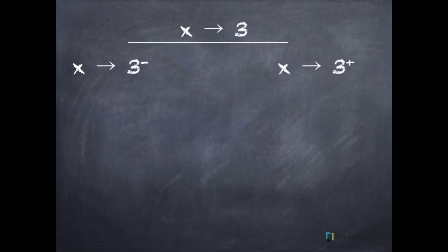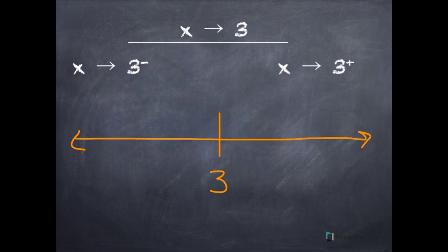How would you approach 3 from the left? You pick a number close to 3 from the left on a number line. Something close to 3 is 2.9, then 2.99, then 2.999. As we pick numbers closer and closer to 3 from the left, that's what's illustrated here with these green numbers.